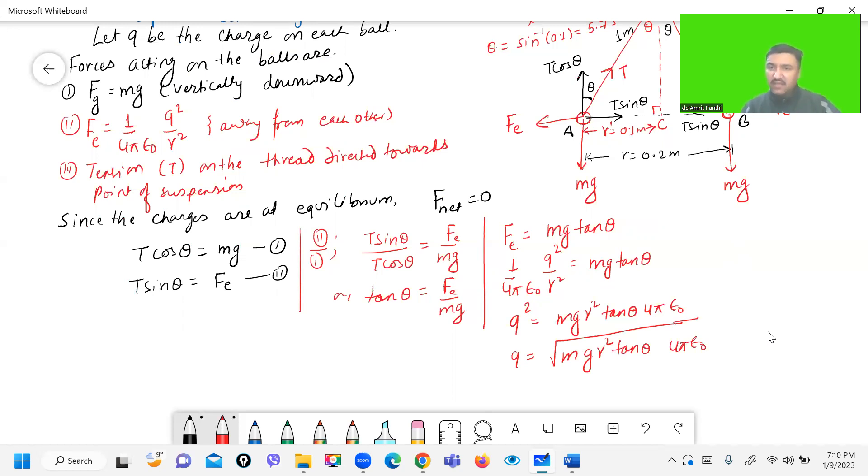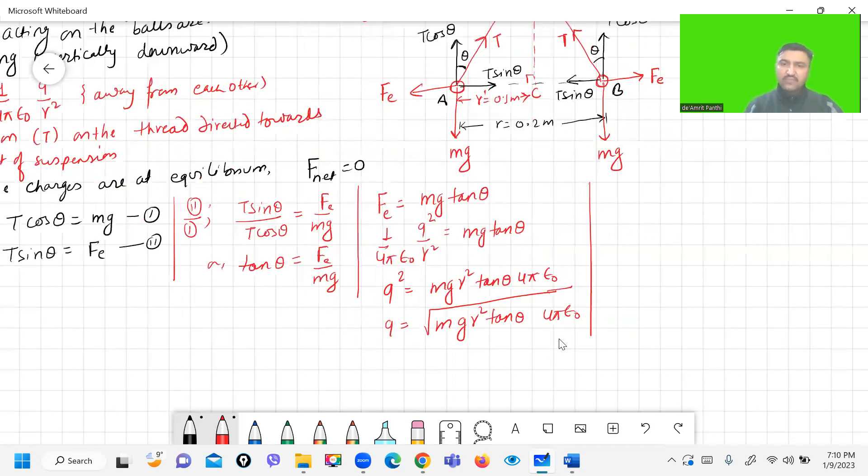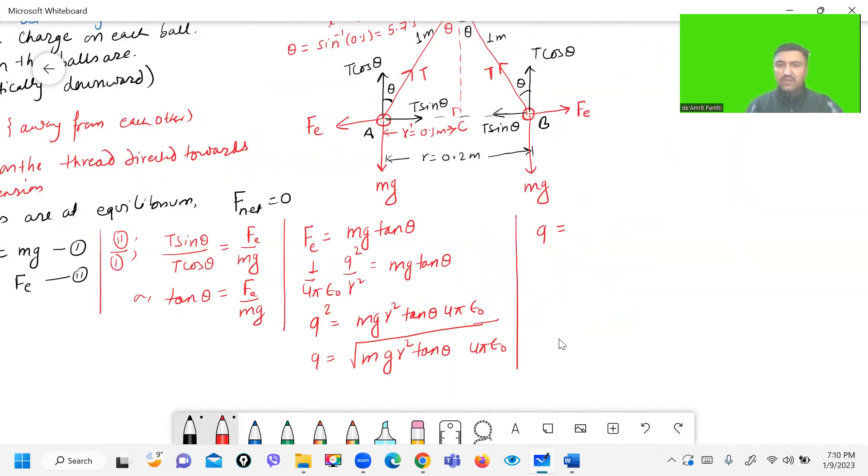Or Q equals square root mg R square tan theta 4 pi epsilon naught. Let me write once again by rearranging this: Q equals 4 pi epsilon naught mg R square tan theta.